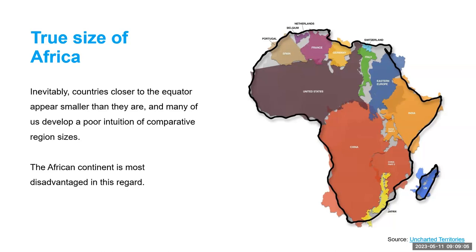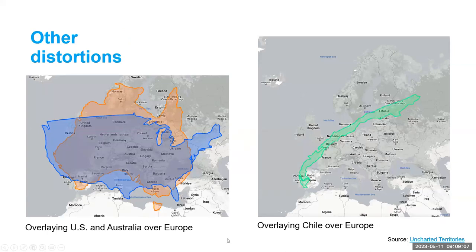Because Africa is so close to or over the equator, it tends to appear smaller than it actually is. The African continent is most disadvantaged in this regard. As you can see, the U.S., China, and Eastern Europe — that's a whole region of a continent — can fit into the size of Africa. And similarly, you can see the U.S. and Australia overlaid over Europe for size comparison. Here on the right, this is Chile — you can see how long Chile really is, but it's hard to see that in the maps we're used to seeing.